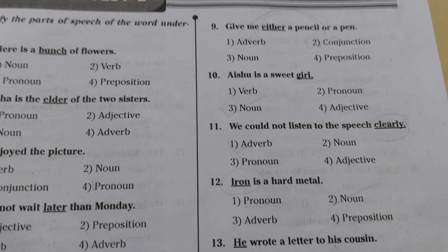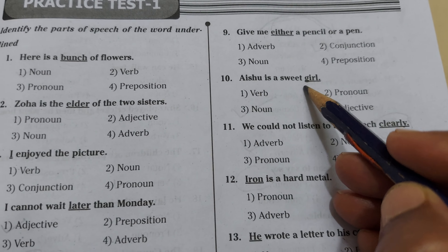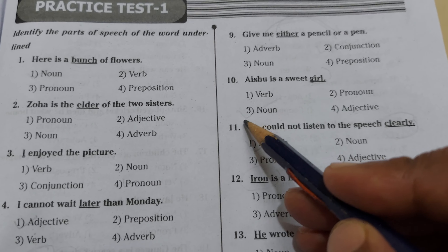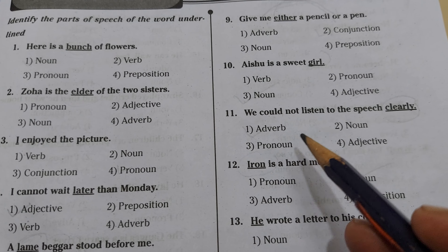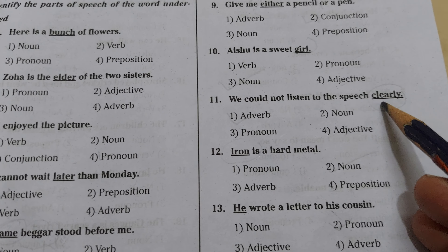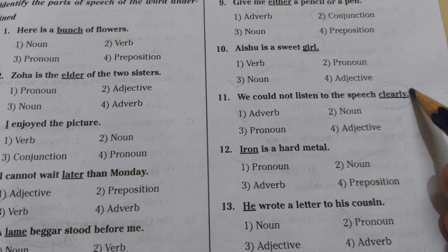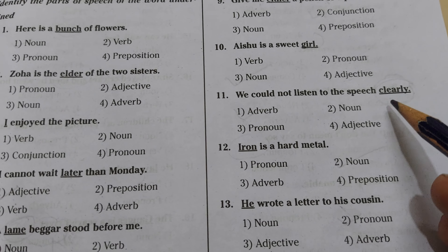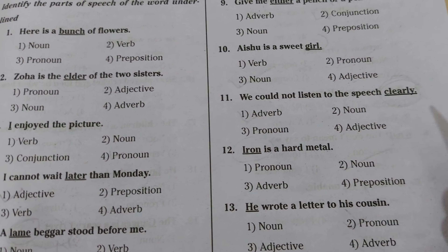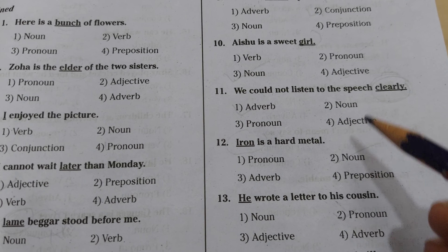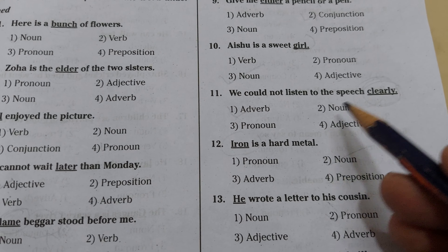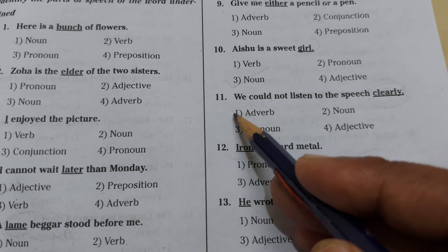'Aishu is a sweet girl' — 'girl' is the name of a person; human beings are nouns. 'We couldn't listen to the speech clearly' — 'clearly' is underlined. LY words — clearly, safely, completely, gradually, daily, regularly, frequently — these LY words are adverbs. Remember: LY words are adverbs.